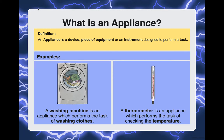The same goes with the dryer — that would be an appliance and the task is to dry clothes. A thermometer is also an appliance that performs the task of checking temperatures. Can you think of other appliances? Think about the different appliances you might have in your own kitchen — it could be the refrigerator, a toaster, a dishwasher. Go to your kitchen and look around to see which appliances you can point out.